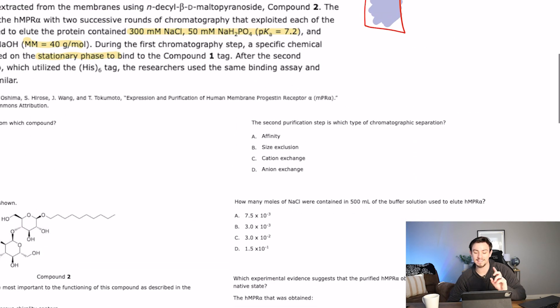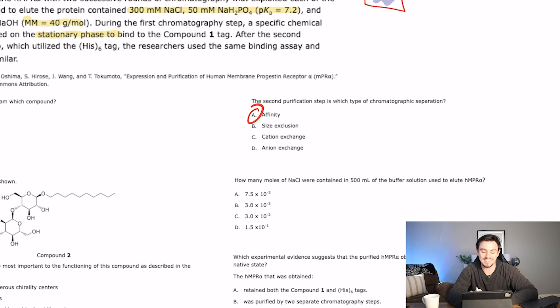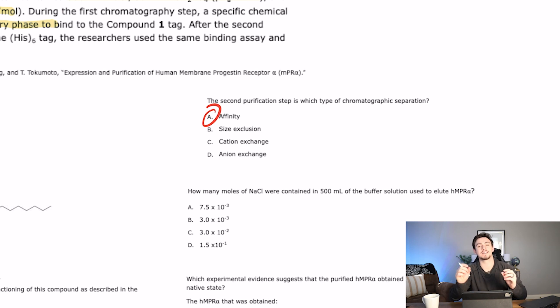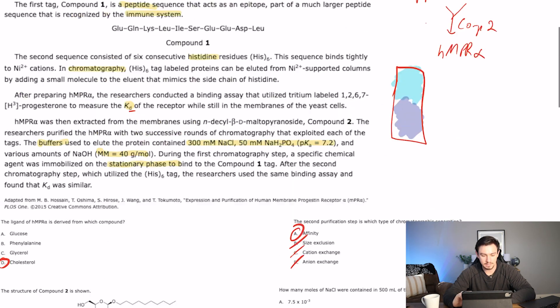So now number 22 says, the second purification step is which type of chromatographic separation? So I kind of gave this one away, but they're talking about affinity chromatography here, right? So this is talking about the histidine one. So the correct answer is A. Size exclusion would have been talking about maybe them putting like successive beads that have different holes and the molecules would get separated based off of which one was larger. The bigger ones would elute first. We didn't talk about that. Cation exchange would talk about if the column itself had a bunch of positively charged molecules and the negative particles stuck to it. We didn't talk about that. And then anion exchange would just flip those phases.